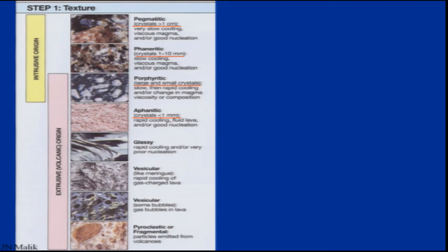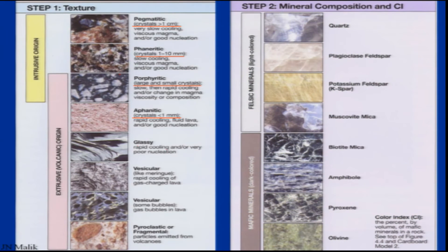Porphyritic texture results when there is initial slow cooling forming larger crystals, followed by rapid cooling — probably because of a change in magma viscosity or composition — resulting in a mixture of larger and smaller crystals. Aphanitic texture with crystal size less than 1 mm indicates rapid or very fast cooling, as seen in the glassy nature of rocks. We also have vesicular, pyroclastic, and others that we will discuss while talking about magma eruptions.